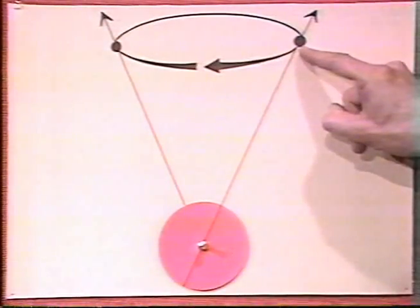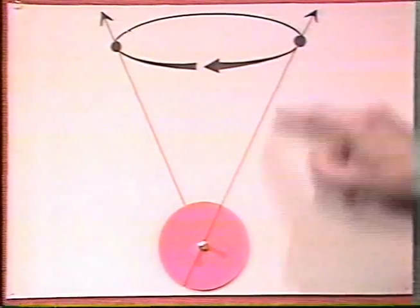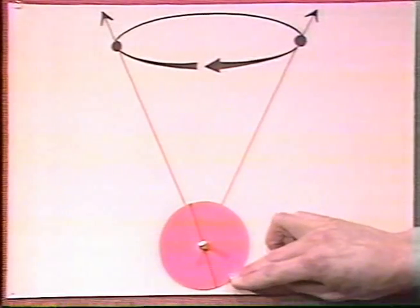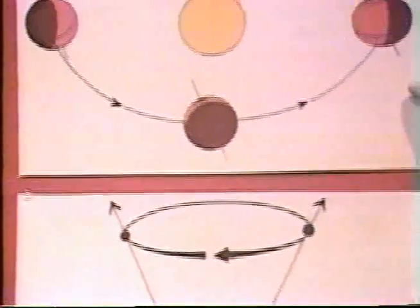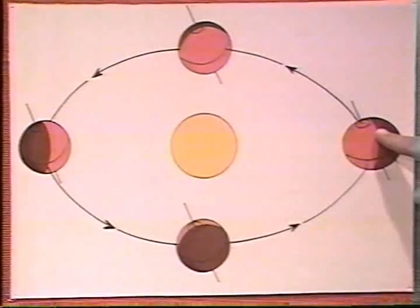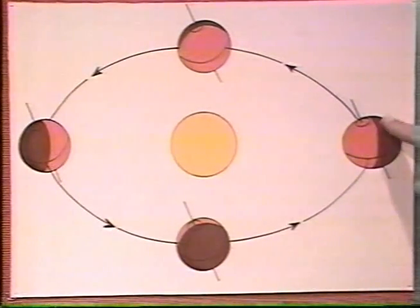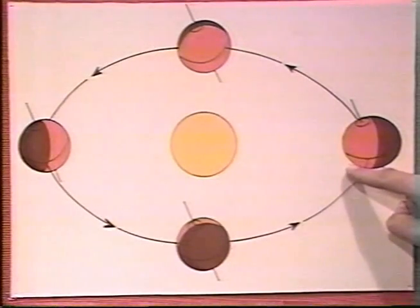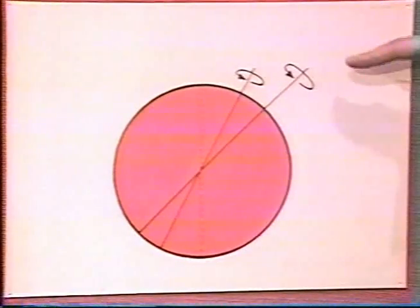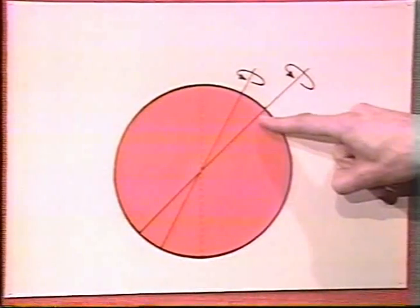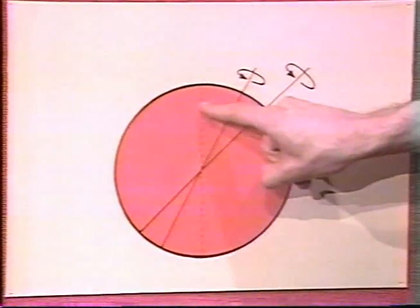This would be the North Star in 13,000 years' time, and 13,000 years after that the situation would be back to normal. So on the simple situation we looked at first — with summer in the Northern Hemisphere in June — in 13,000 years with the axis in the opposite direction, we'd have winter in June. That is one major change in the orientation of the Earth. There's a second change, which also has to do with the axis of rotation of the Earth — specifically the angle of that axis.